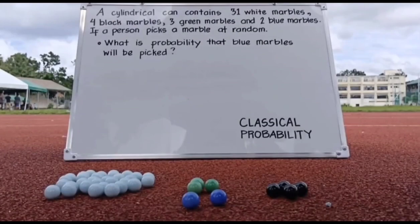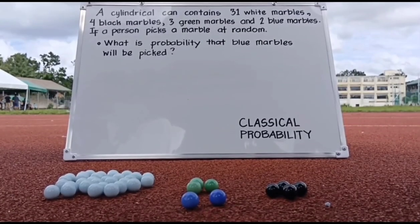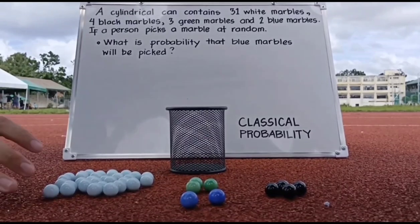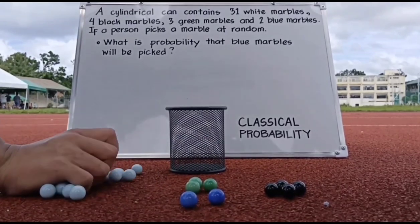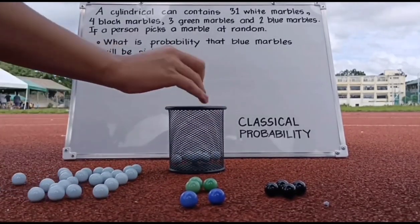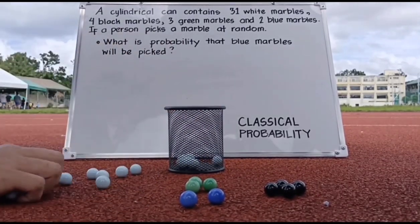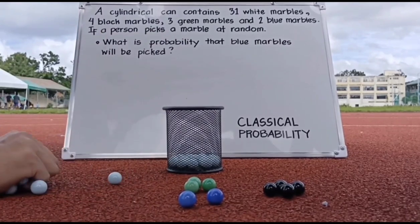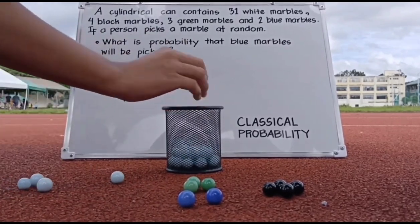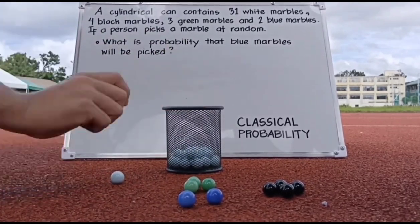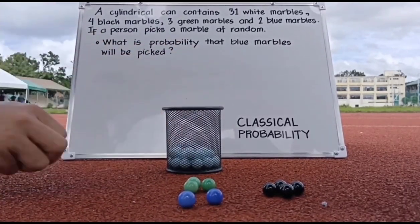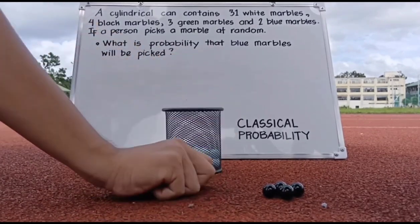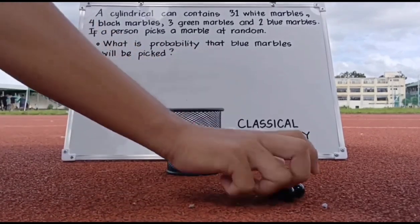A cylindrical can contains 31 white marbles, 4 black marbles, 3 green marbles, and 2 blue marbles. If a person picks a marble at random, what is the probability that 2 marbles will be picked?